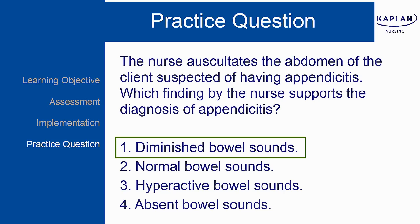Indications include abdominal pain in the right lower quadrant at McBurney's point, anorexia, vomiting, diarrhea or constipation, rigid abdomen, increased temperature, and leukocytosis. Nursing interventions include no application of heating pads, no enemas or laxatives. Pre-operatively, maintain NPO status until blood laboratory reports are received. No analgesics until the cause of pain is determined. Apply an ice pack to the abdomen to alleviate pain. Observe for signs and symptoms of peritonitis and recognize that sudden loss of pain indicates perforation and is an emergency.